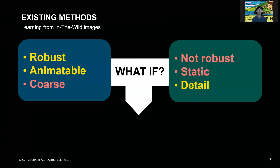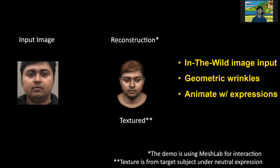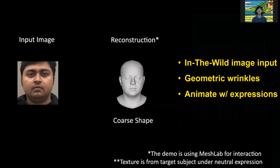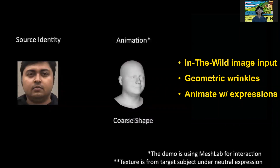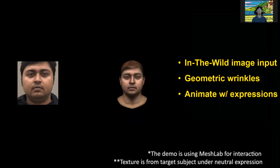In summary, existing works either produce smooth, animatable models or wrinkles that cannot be animated. DECA is designed to give the best of both worlds. DECA produces robust, animatable, detailed displacement models with an accurate coarse-shape regressor, learned in a fully end-to-end training framework without direct 3D supervision. DECA occupies a unique space: it takes a single in-the-wild image as input and produces accurate coarse shape together with geometric facial details, which both can be realistically animated. The demo alternates between the coarse shape and the detailed shape with varying expressions across different viewing angles, showing the effects of the animatable geometric details and DECA's potential in 3D avatar creation.